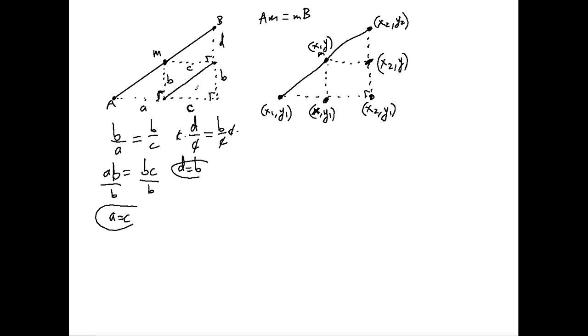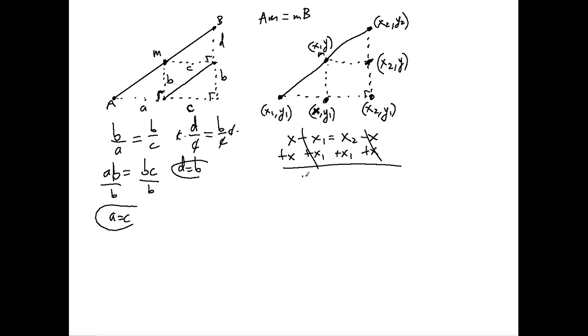Remember that A equals C, so we express A and C in terms of differences of X coordinates and set them equal: X minus X1 equals X2 minus X. Adding X and X1 to both sides gives 2X equals X1 plus X2. Dividing both sides by 2 yields X equals (X1 plus X2) over 2. We have now proved the X coordinate of the midpoint formula.